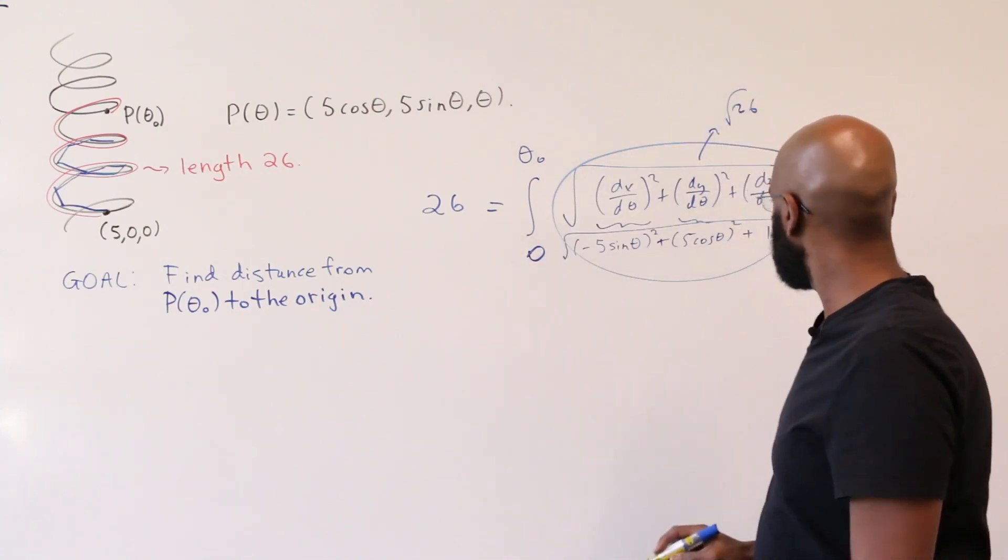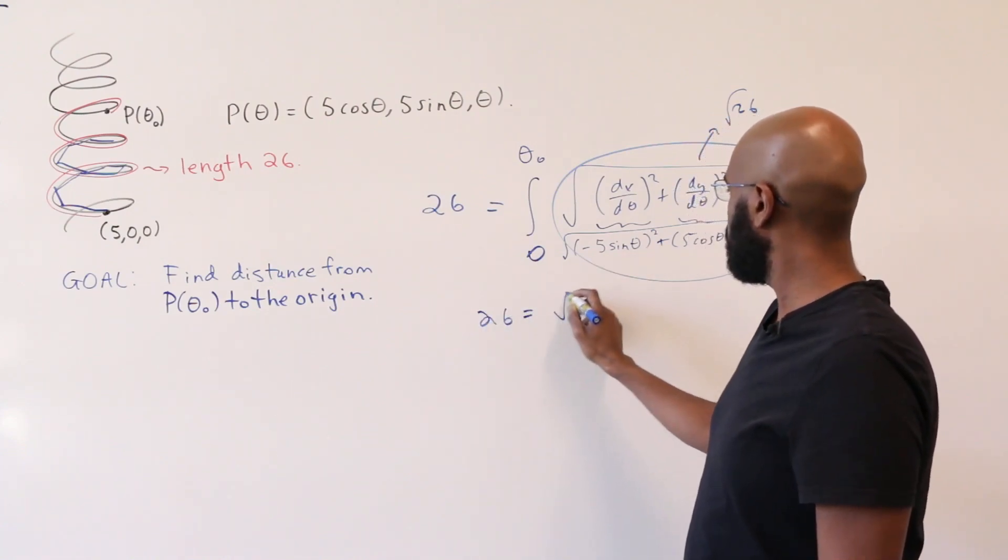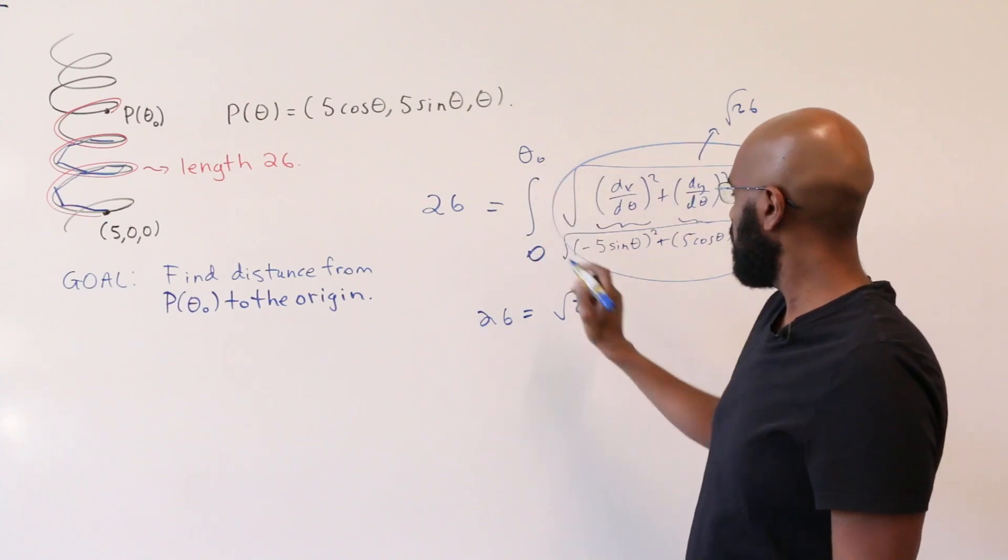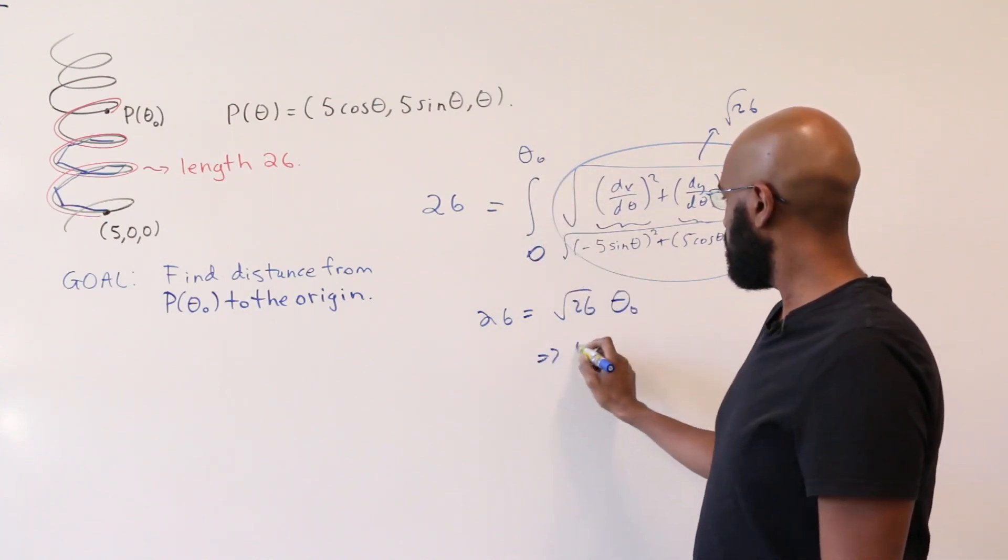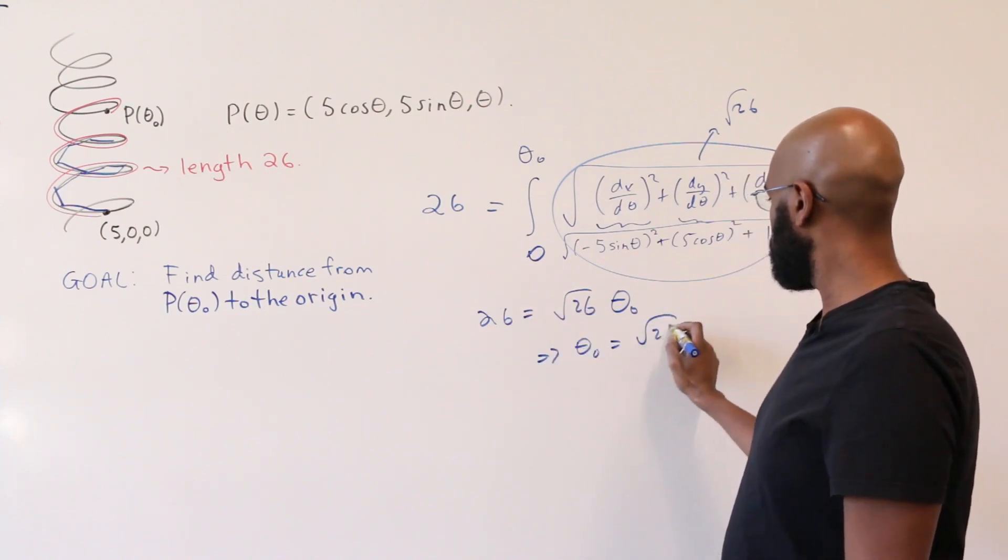That's convenient because we have a 26 here. So this tells us that 26 is the square root of 26 times the length of this interval, which is theta naught. So theta naught is 26 over root 26, which is root 26.